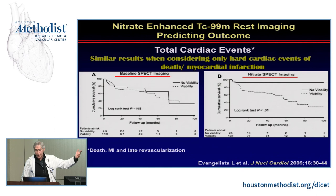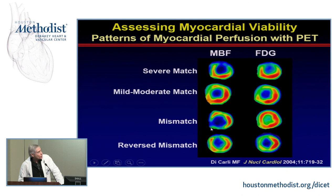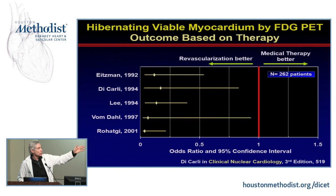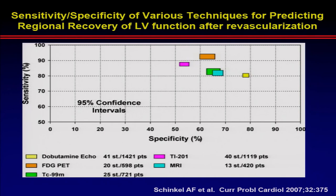PET uses FDG-perfusion mismatch: we look for FDG uptake combined with lack of perfusion on ammonia imaging — residual glucose uptake where there's diminished perfusion indicates cells are alive and still using glucose as a substrate. PET has been one of the best techniques for myocardial viability over the years. Using PET to guide therapy, you can determine who does better with revascularization compared to who does better with medical therapy.